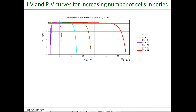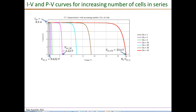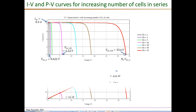The current versus voltage curves for various values of NS are shown in the same plot. The short circuit current Isc is 8.3 amperes for all cases, since the cells are connected in series — the current does not change. The open circuit voltage for a single cell is 0.622 V; for about 10 cells it is 6.22 V; and for 54 cells in series it is 33.6 V.